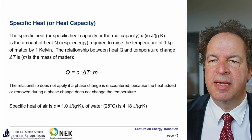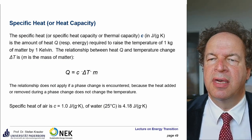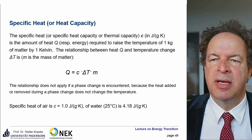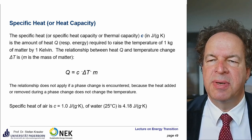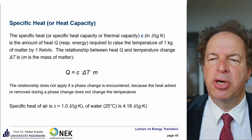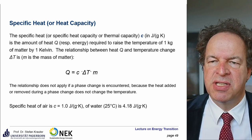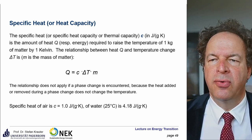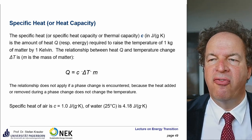Now some thermodynamic basics. We talk about specific heat — heat capacity. The amount of heat Q equals the specific heat capacity C times the mass times the temperature difference ΔT. For example, one liter of water equals one kilogram. The specific heat of air is quite low, about 1 J/(g·K). For water it is 4.18 J/(g·K) — you need 4.18 joules to heat one gram of water by one kelvin.